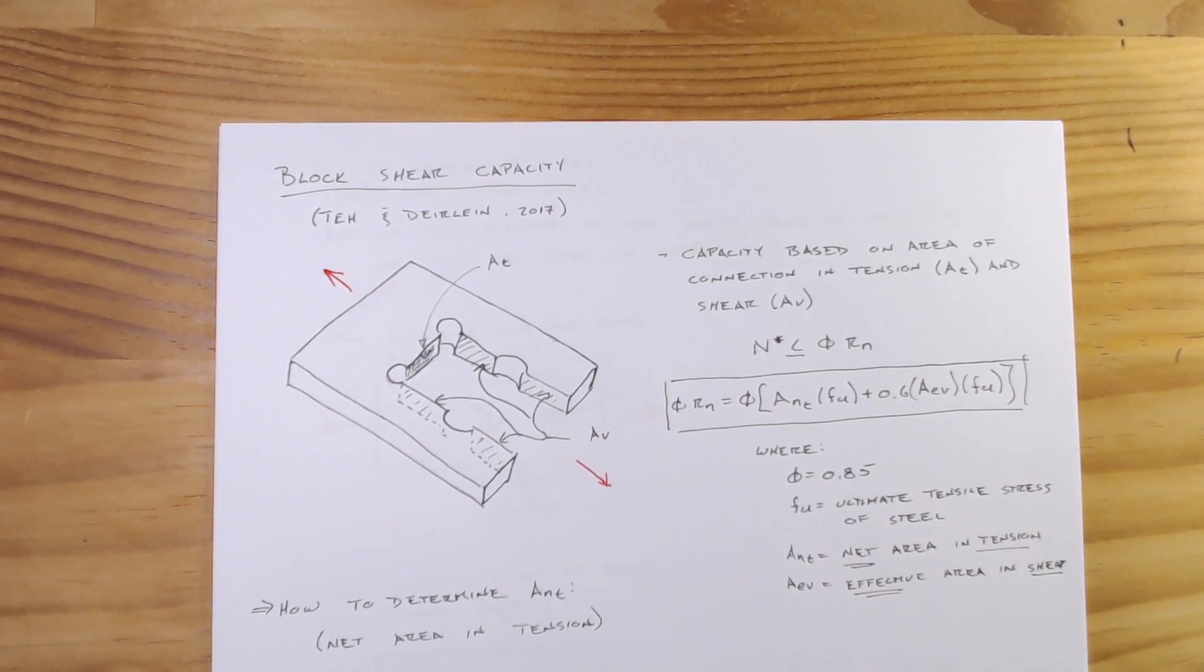That's all well and good and you can kind of see the different patterns that these take, but I guess one of the big questions is, well, the ultimate stress is pretty easy, the phi is pretty easy. How do we determine what these two different areas are for different cases? And that's what we're going to work through on the remainder of this video.